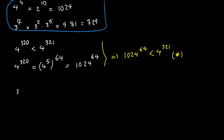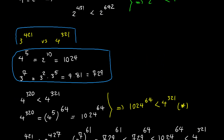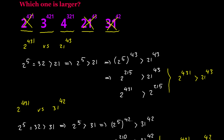Next, 3 to the power of 421 is less than 3 to the power of 427, which can be written as 3 to the 7th power raised to the power of 61, since 7 times 61 equals 427. Since 3 to the 7th power is 729, we have 729 to the power of 61, which is obviously less than 729 to the power of 64. And since 729 is less than 1024, this is less than 1024 to the power of 64. Using the star result, this is less than 4 to the power of 321. So 3 to the power of 421 is less than 4 to the power of 321, meaning the second number cannot be the largest.